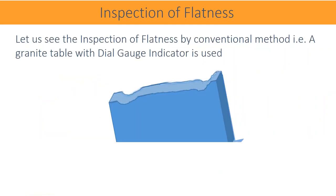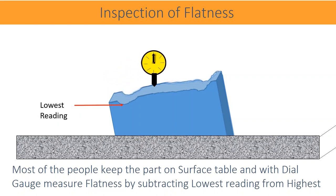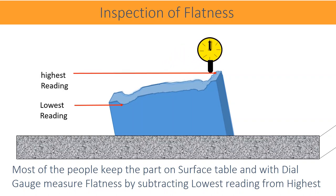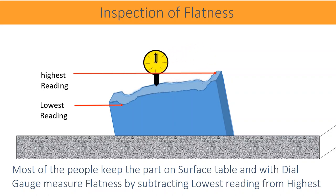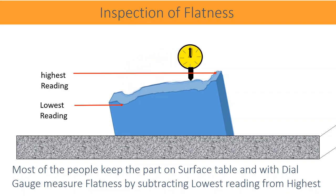Let us see the inspection of flatness by conventional method. A granite surface table with a height gauge and dial gauge indicator is used. Most people keep the part on the surface table and with the dial gauge indicator measure the flatness by subtracting the lowest reading from the highest. Please note that the flatness is required to check the top surface. The value measured this way is not the flatness — recall that flatness is the error between two parallel planes without any reference or datum.